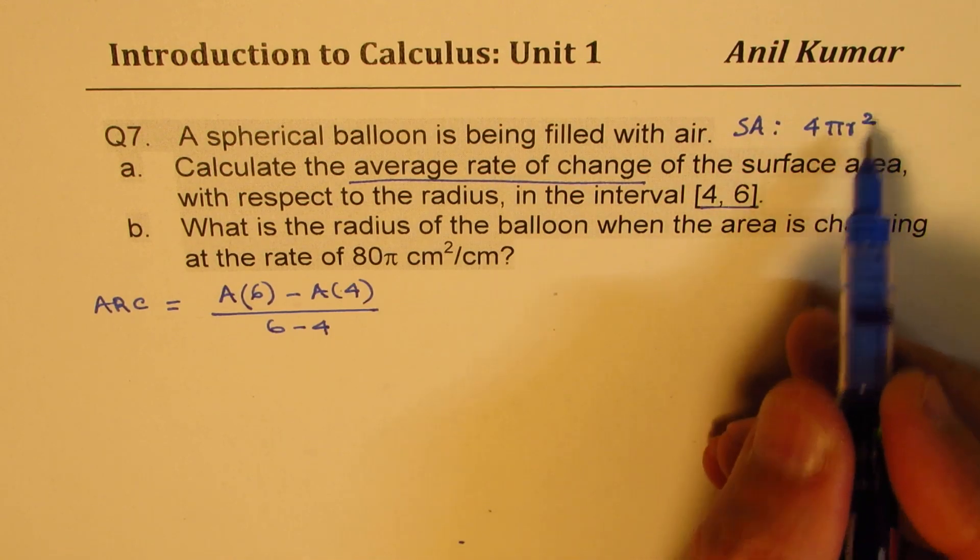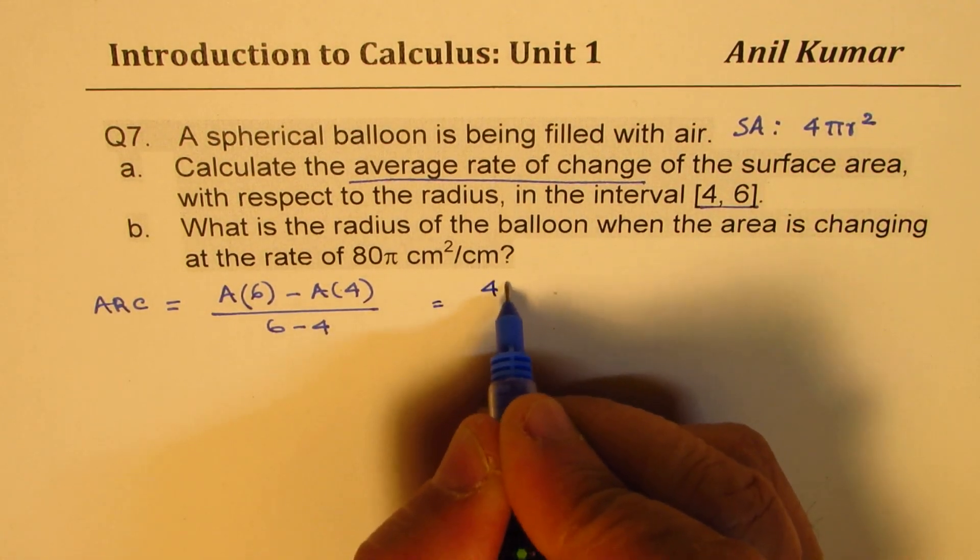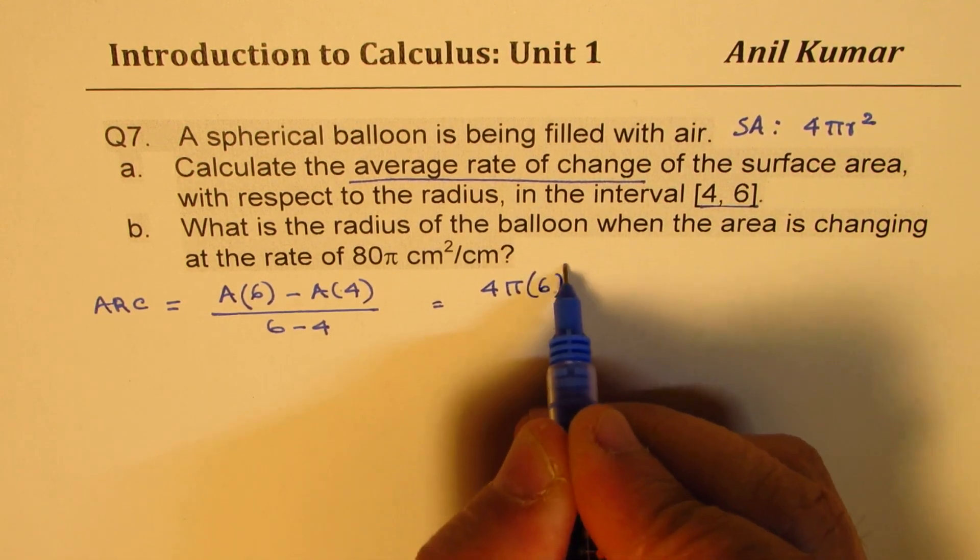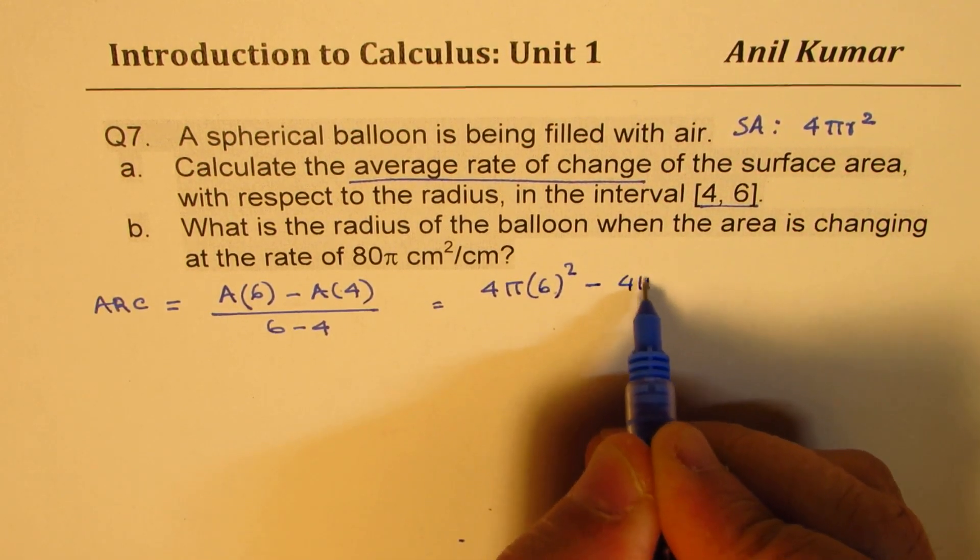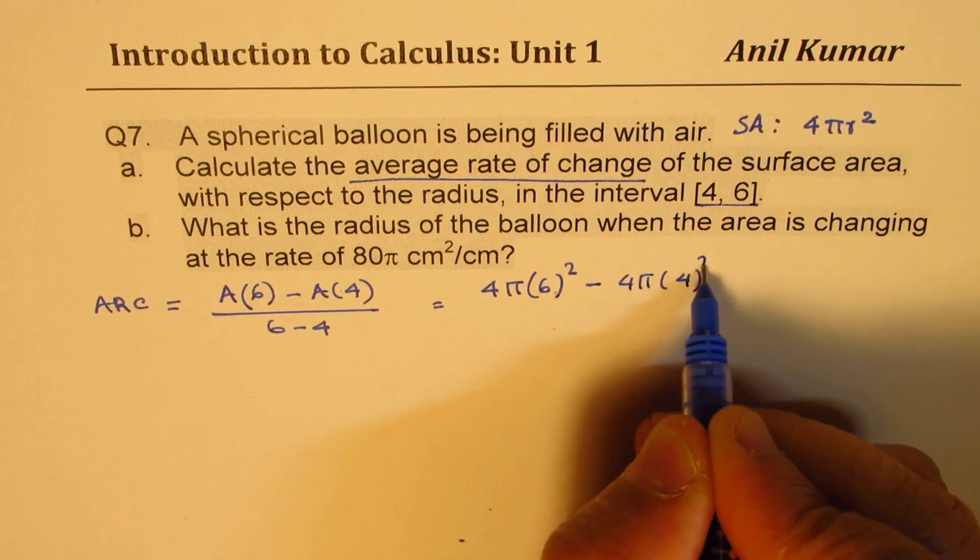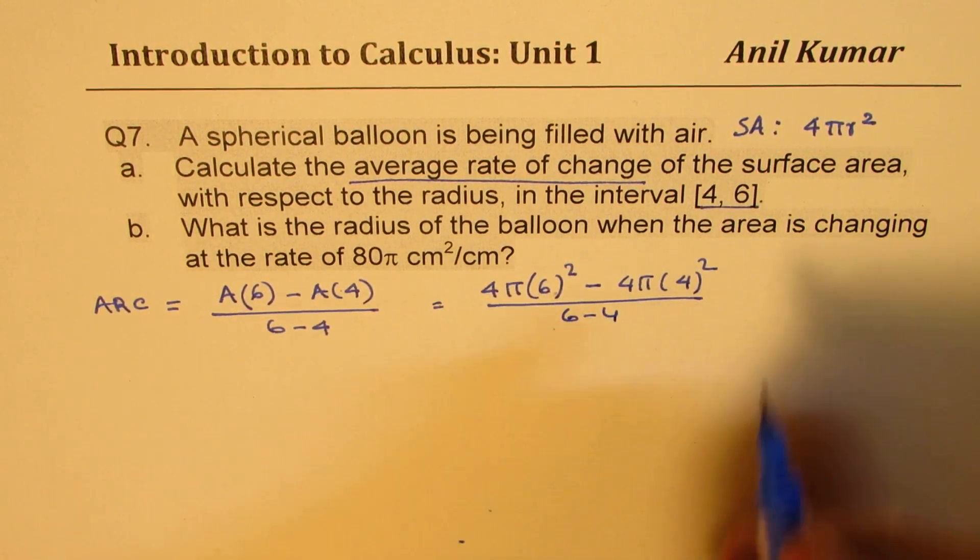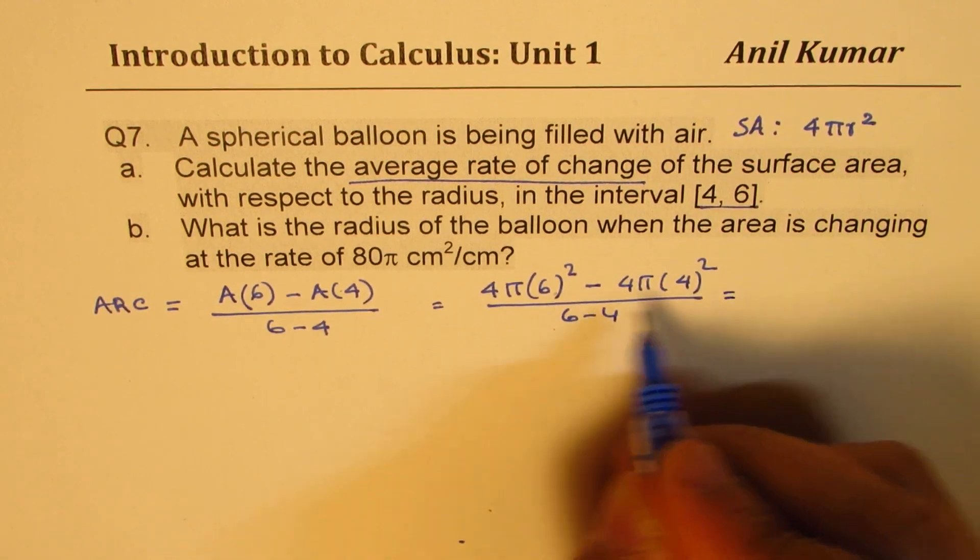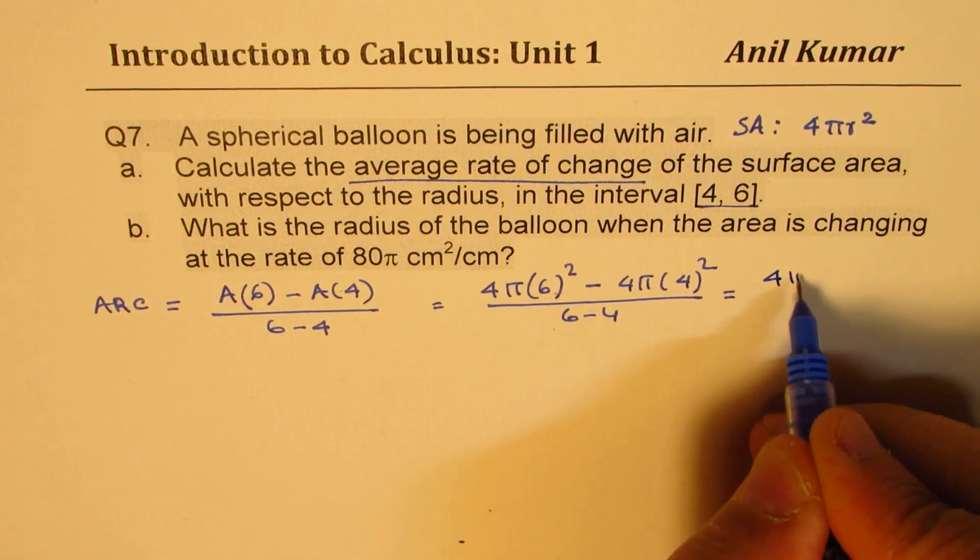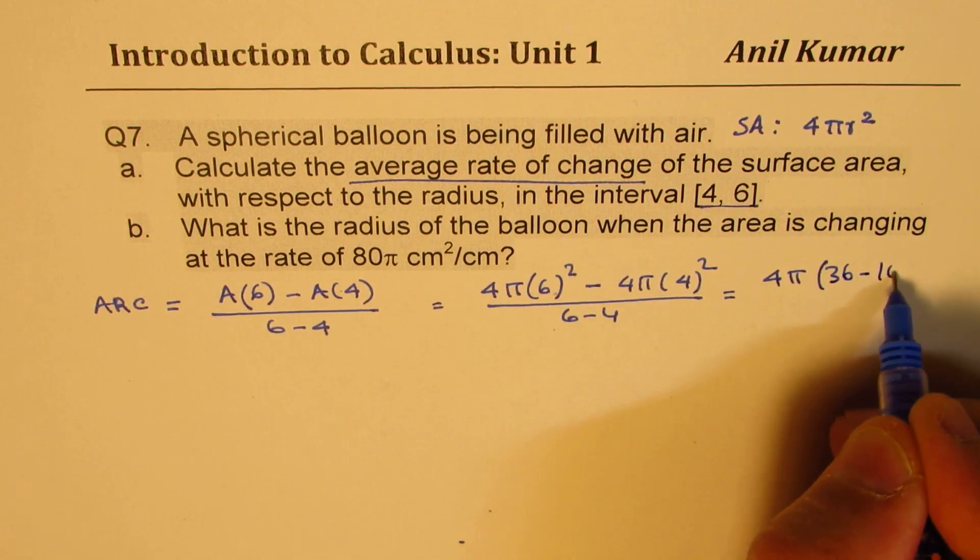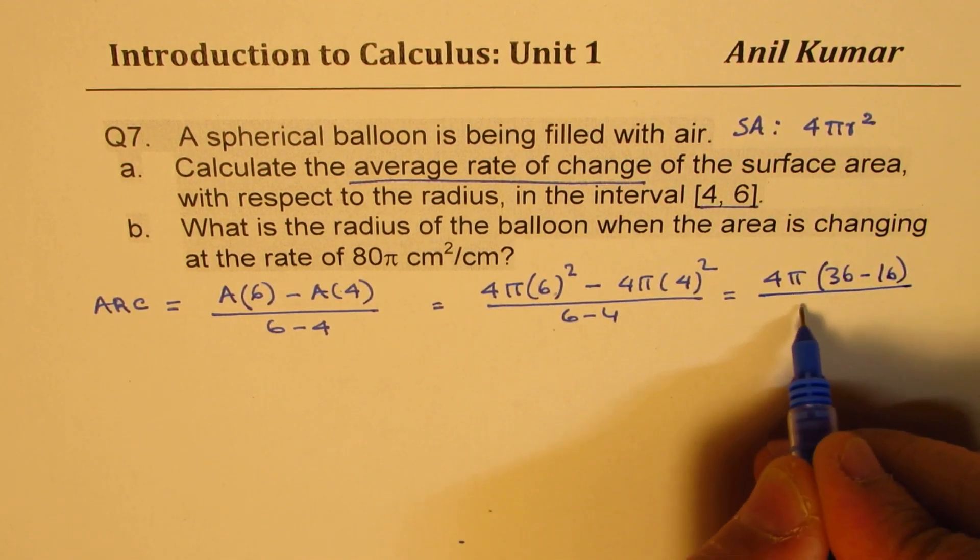Applying the formula 4πr², we can say 4π times radius 6 squared minus 4π times 4 squared over 6 minus 4 which is 2. So we can take 4π common and here we get 36 minus 16 over 2.